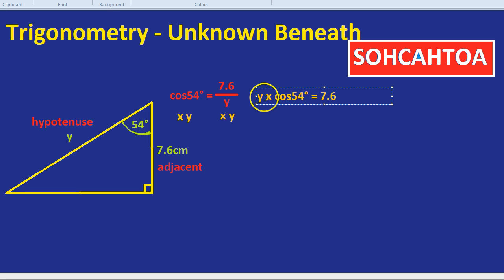So we have Y times by cos 54 equals 7.6. But we wanted to find out what Y is. You would divide by cos 54 to both sides. So divide by cos 54 and divide by cos 54. What does that get us? Well we will be left with on the left hand side Y and on the right hand side 7.6 divided by cos 54. Let's get our calculator out and then work that one out.